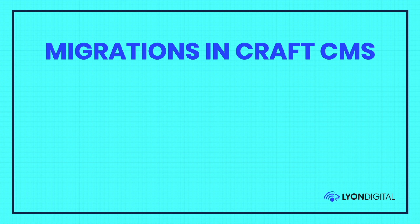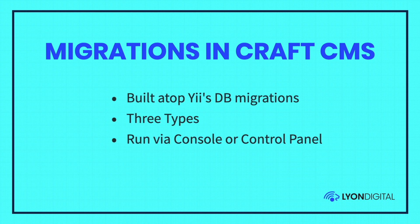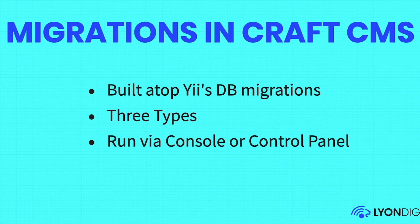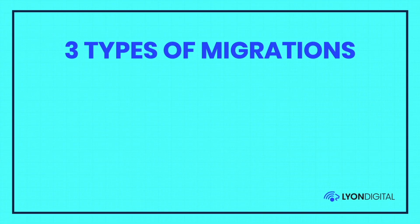In Craft CMS there are three types of migrations. Like most things in Craft, it has a nice layer of functionality on top of YII. So if you want to read more about how the database migrations work underneath the hood, check out the YII 2 docs. You can run these via the console — that's the most common way to generate, run, and apply them. Also when you're deploying, which we'll go over at the end, you may want to check out my project config video. You can also run these and view them in the control panel.